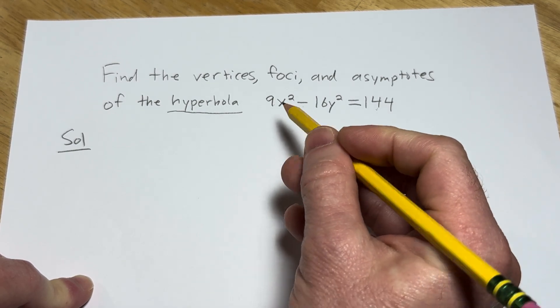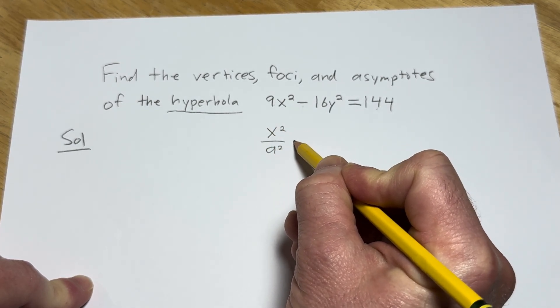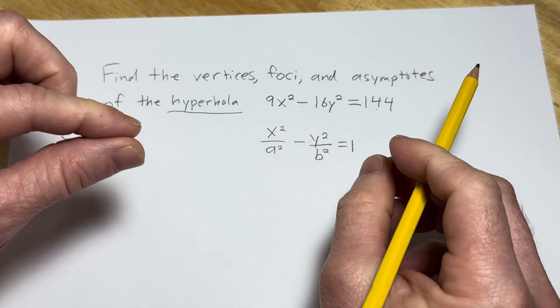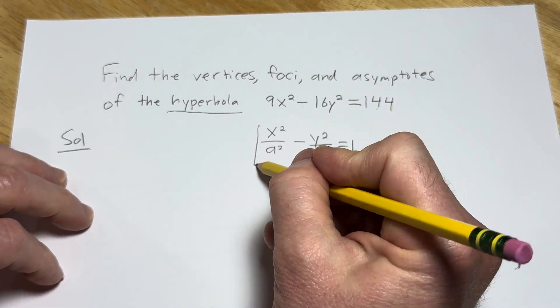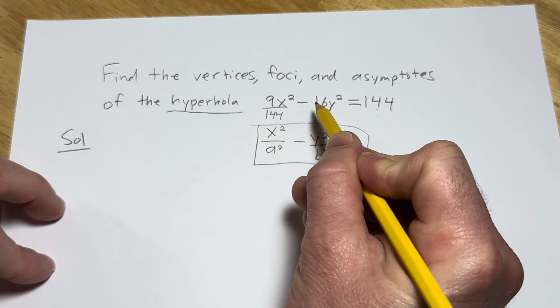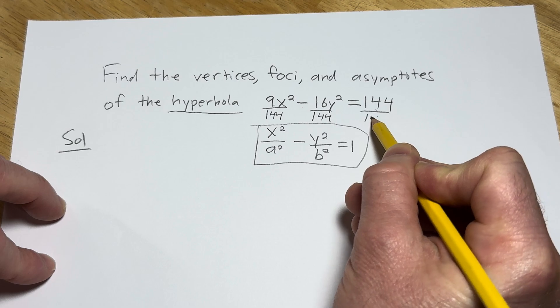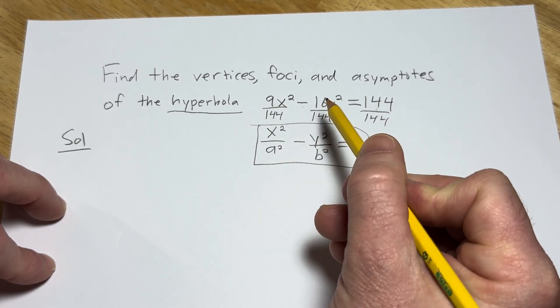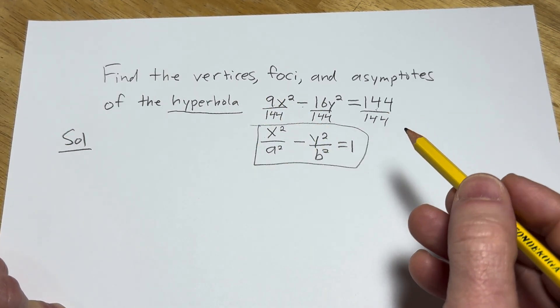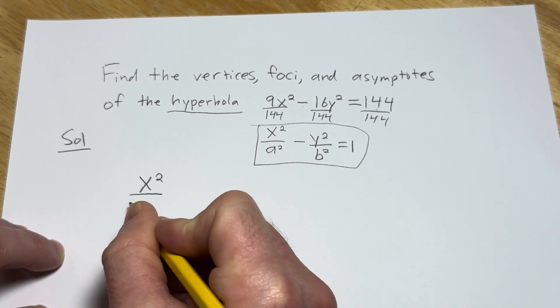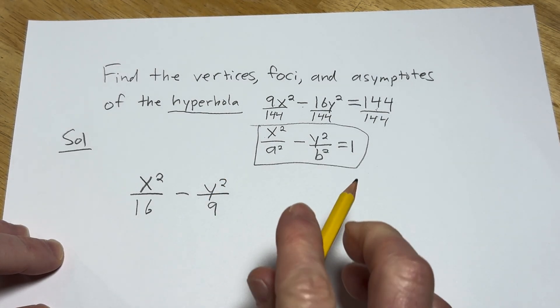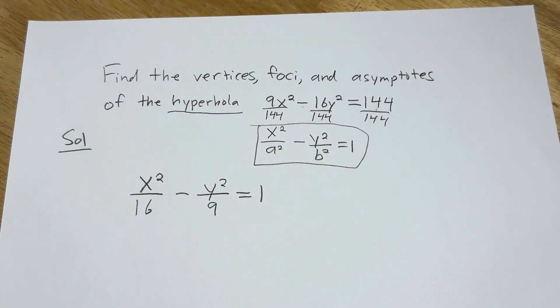This needs to be a 1, okay? Because the formula for a hyperbola looks like this: x squared over a squared minus y squared over b squared equals 1. This is the formula for a hyperbola centered at the origin. So we need this to be a 1, so let's make it a 1. To do that, we can just divide by 144. So divide each term by 144. 9 goes into 144 sixteen times, so this will be x squared over 16 minus y squared over 9 equals 1.